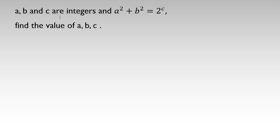a, b, and c are integers and a squared plus b squared equals two to the power of c. Find the values of a, b, and c. Let's analyze the main equation — two to the c.